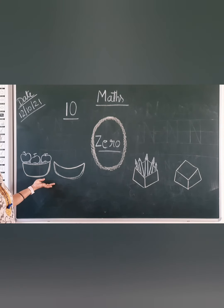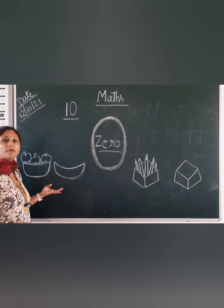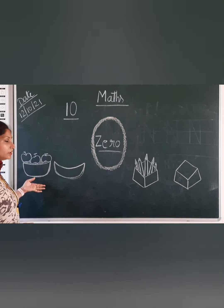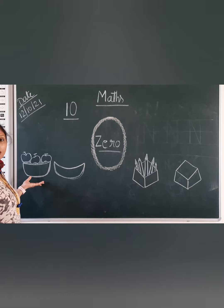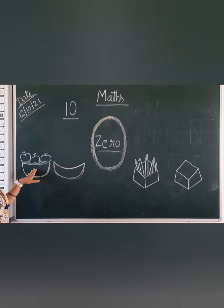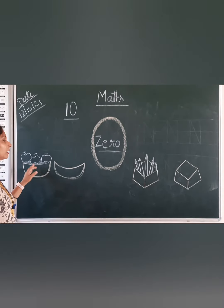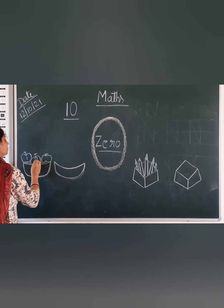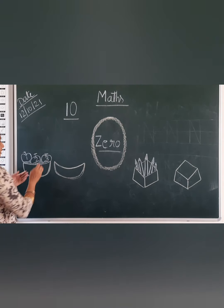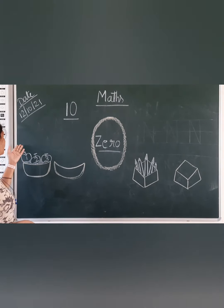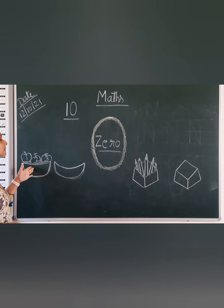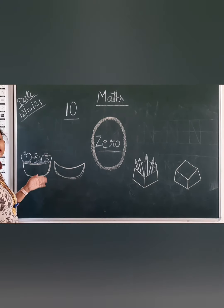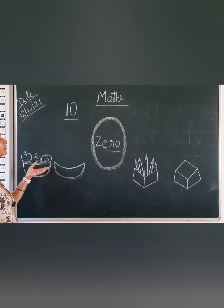Now look at the board. Here I am giving you an example. Look at the first basket. In this basket there are some apples. How many apples? One, two, three. Look at this basket — this basket has three apples. Yaha par is basket pe kitne apples hai? One, two and three.